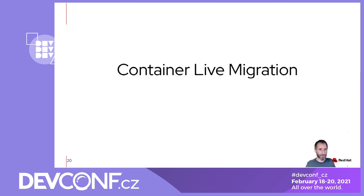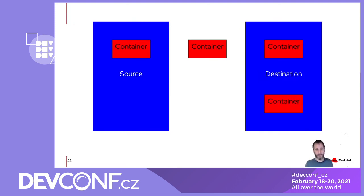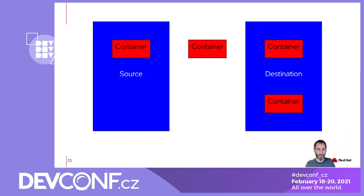For container live migration — which I'll demo at the end — I have my source system with a container running. I take a copy, write it to disk, transfer it to the destination system, and start it once or multiple times. The container on the source system can continue running or I can stop it, whatever is best for my use case.